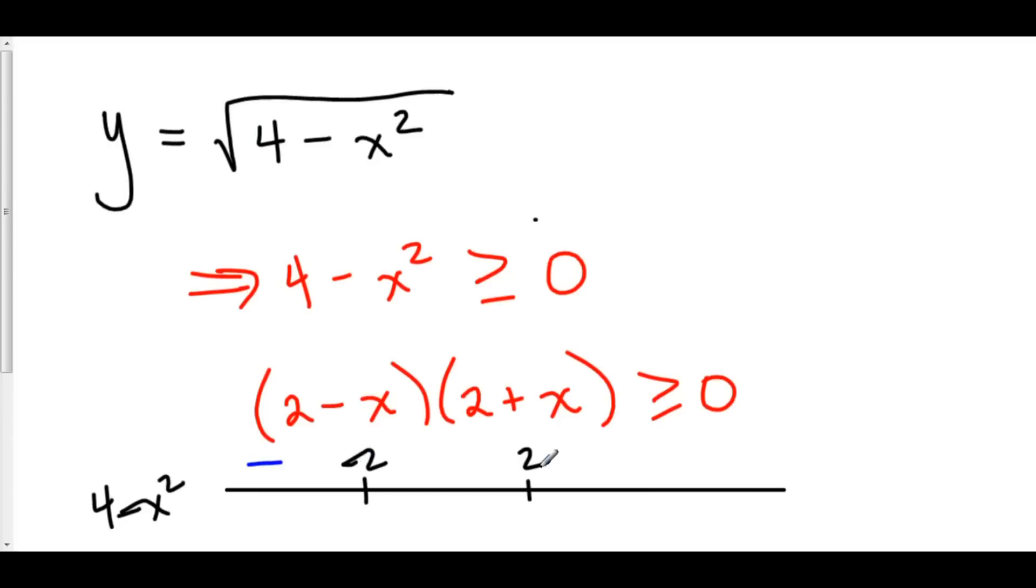Let's check in between negative 2 and 2. Like, for example, 0. 2 minus 0, that's positive. 2 plus 0, that's also positive. So, positive times a positive is a positive. So, everywhere in between negative 2 and 2, we're going to have a positive number inside of this square root.